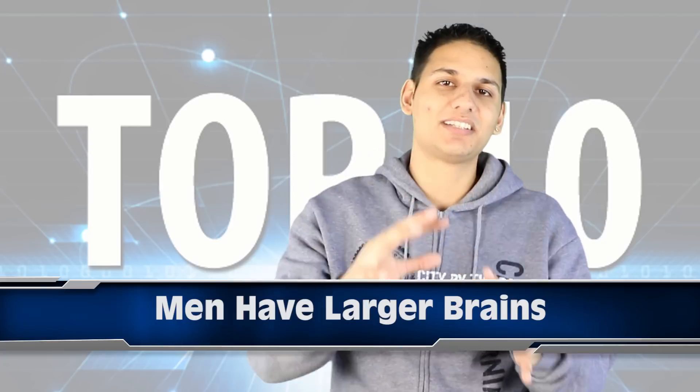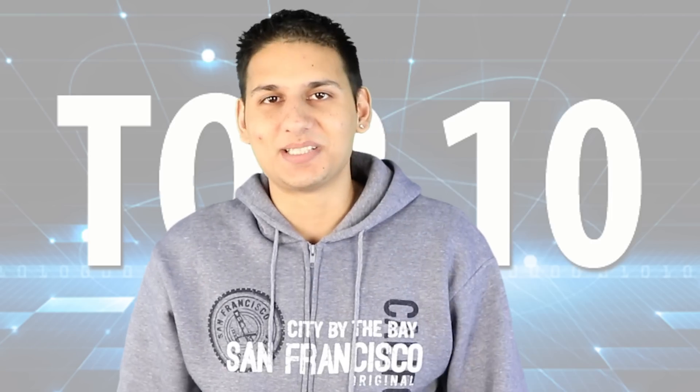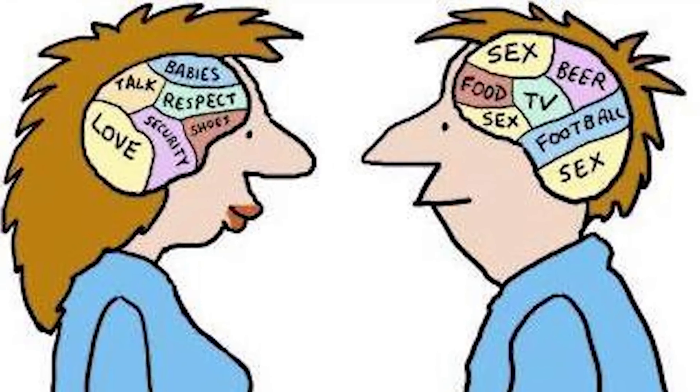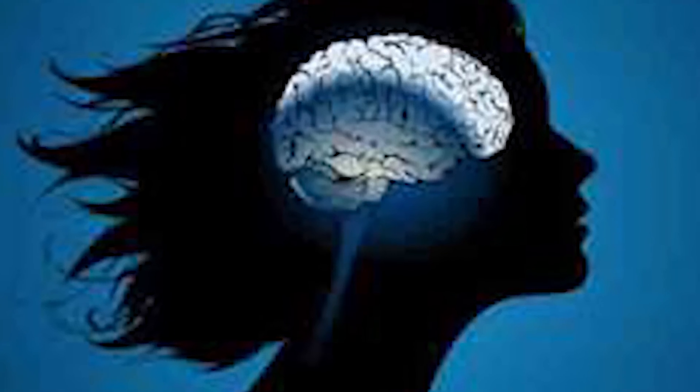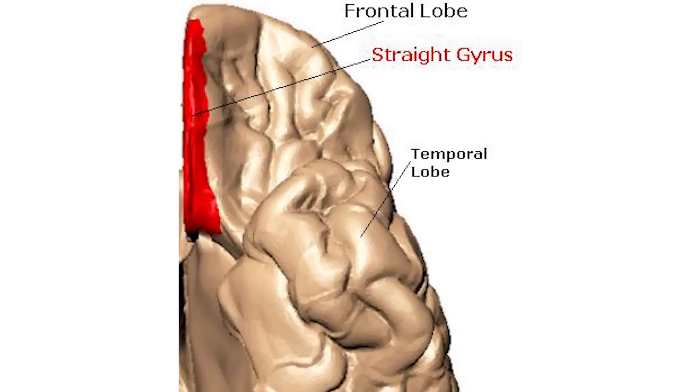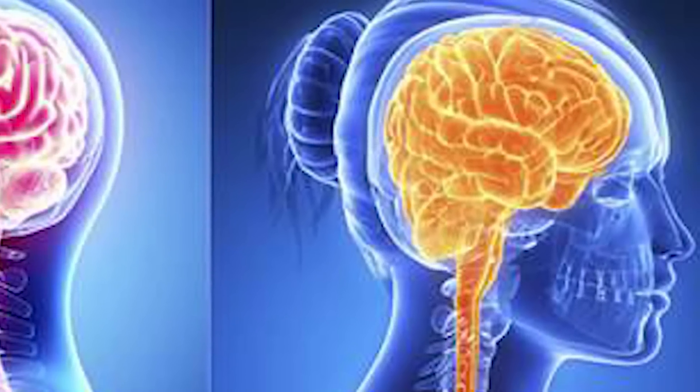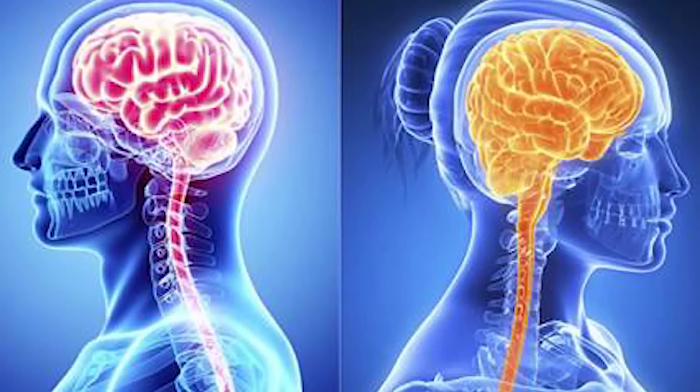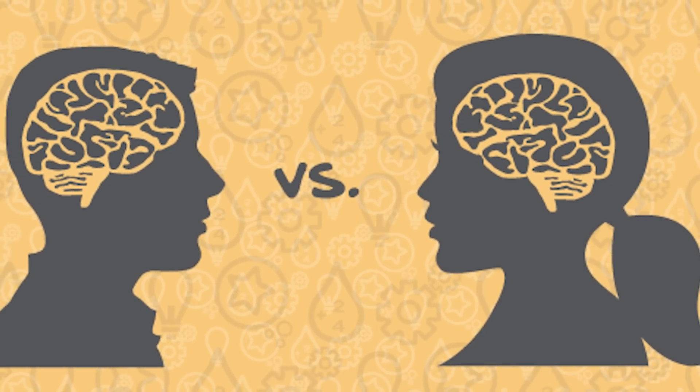Okay, so in at the number 9 spot, sorry ladies, but men's brains are actually 10% larger. But this doesn't mean men are smarter than women. Although women's brains are smaller, they have more nerve cells and connectors that work more efficiently than a man's brain. Also, an area known as the straight gyrus, which is responsible for nurturing, is actually larger in the female brain. It was also discovered that women tend to process information on the emotional right side of the brain, where men process things on the logical side of the brain, which is the left side.